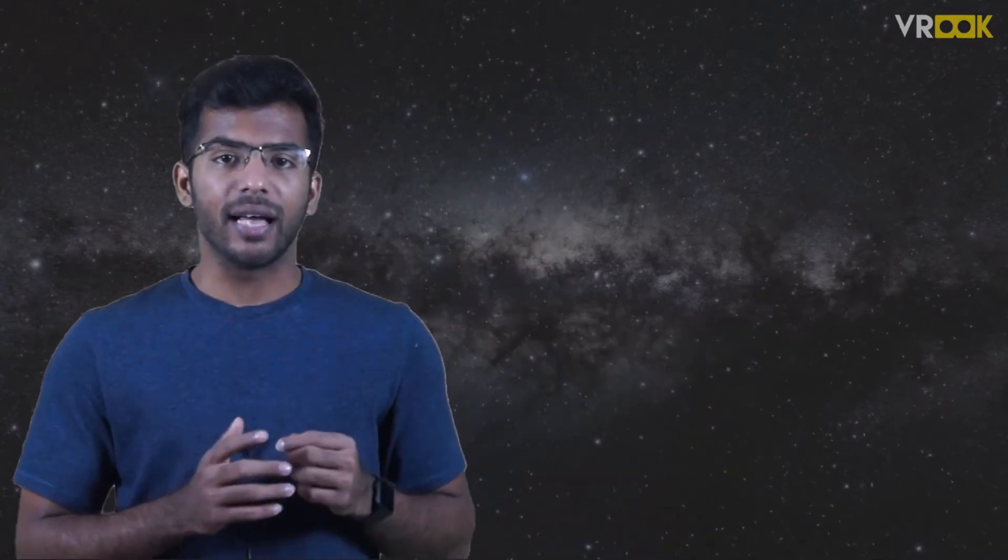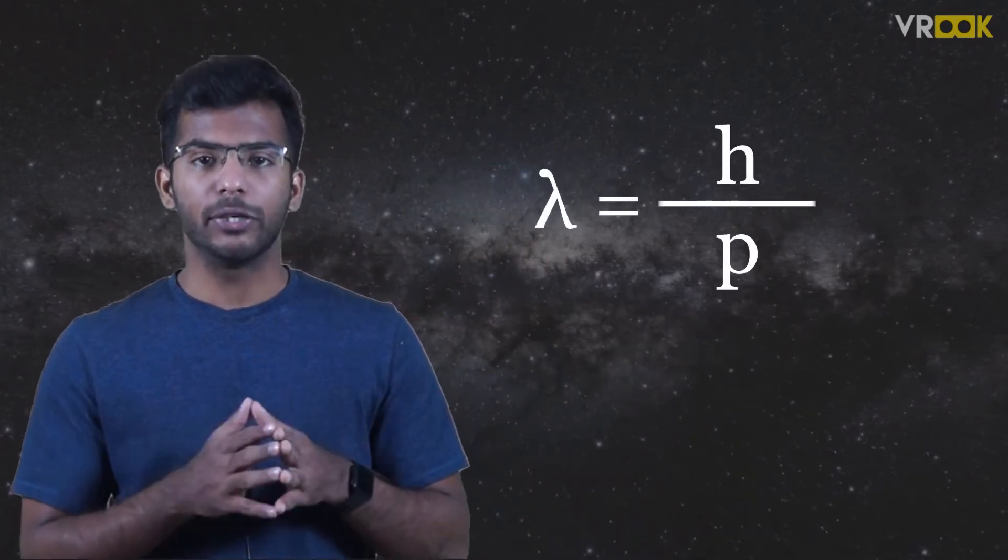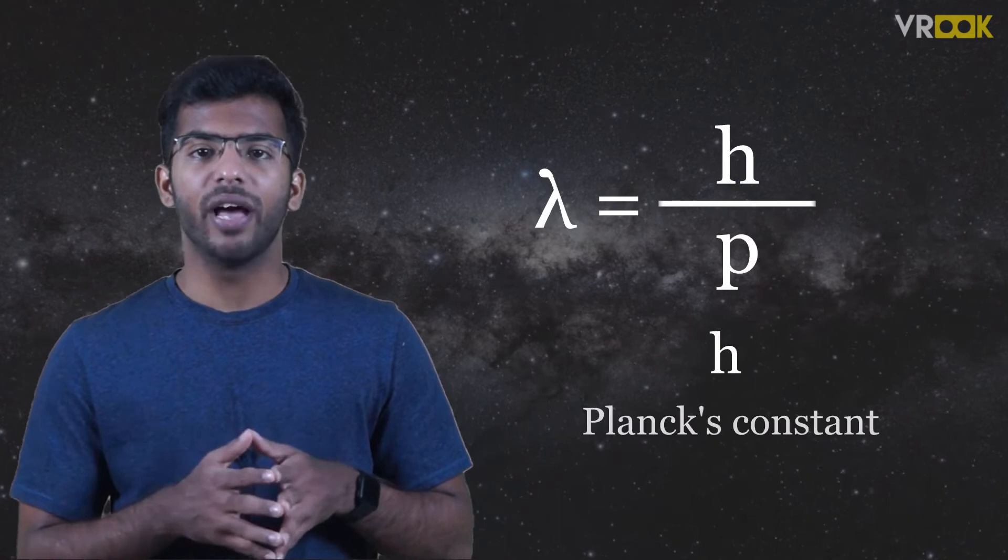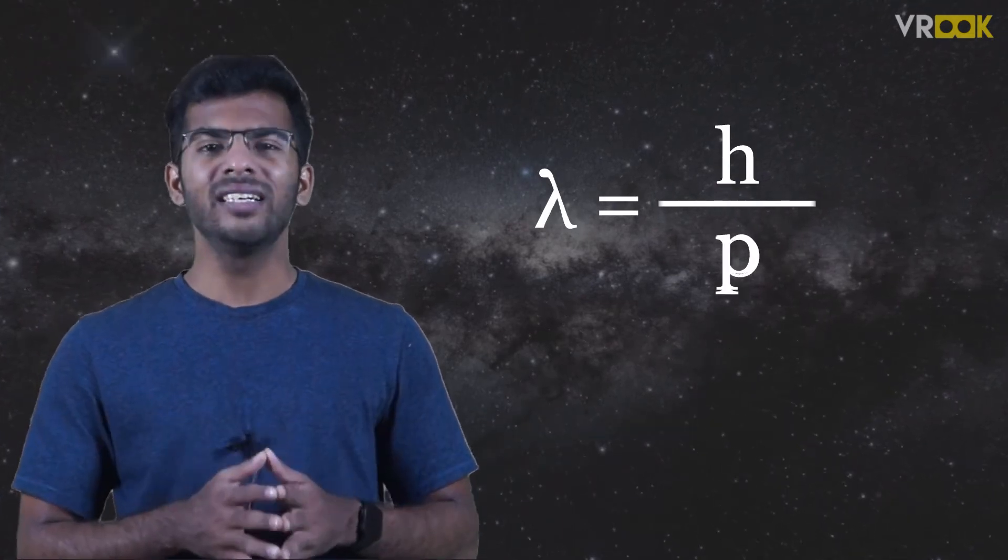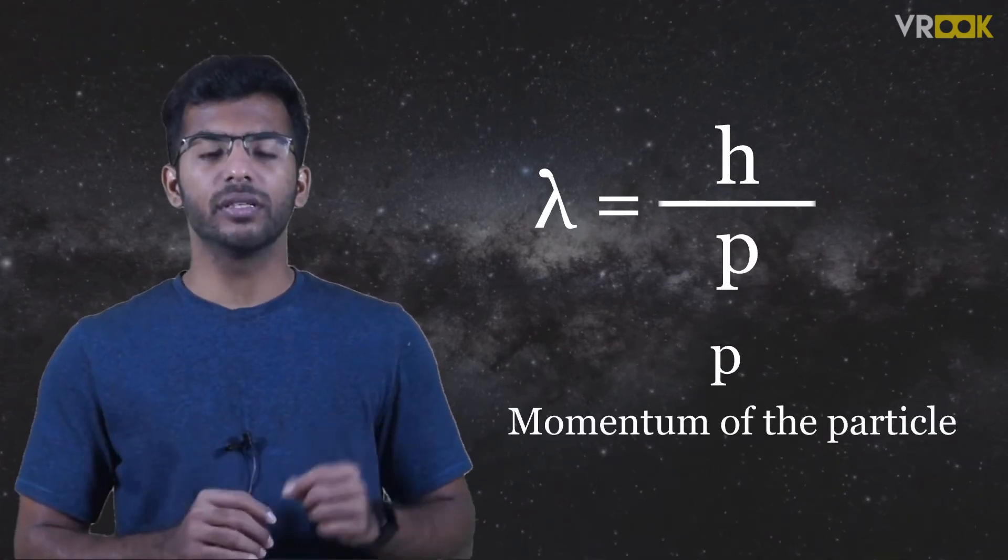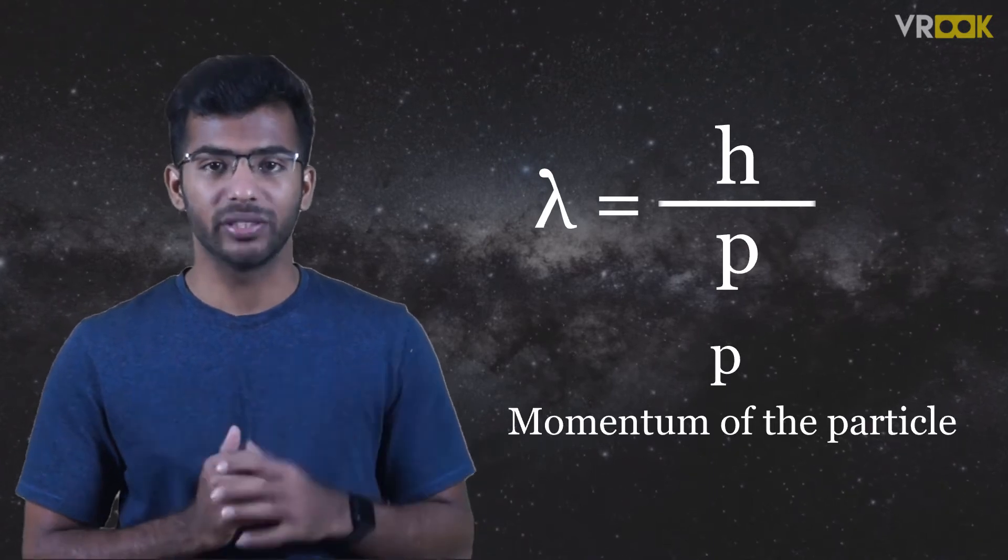He also derived an expression for de Broglie wavelength. It is given as lambda equals h by p, where h is the Planck's constant and p is the momentum, which is mass into velocity.